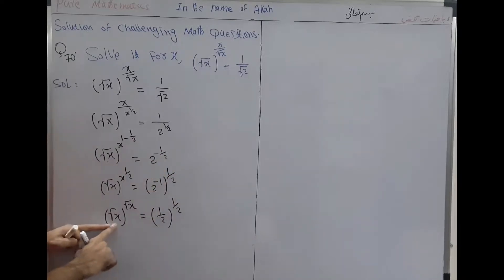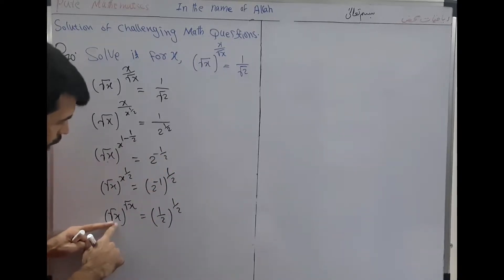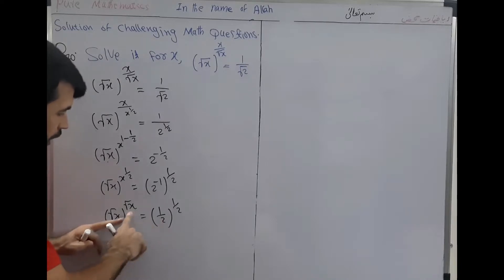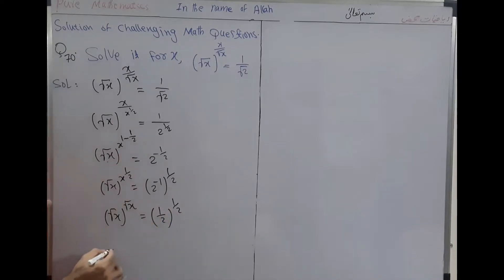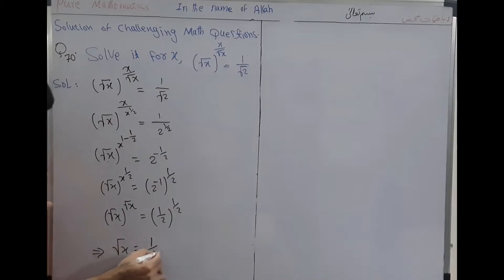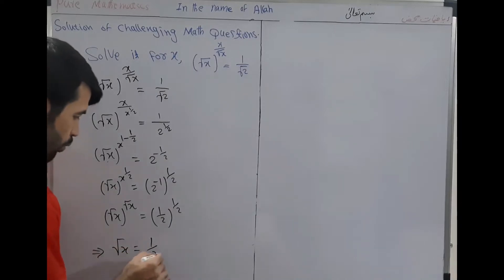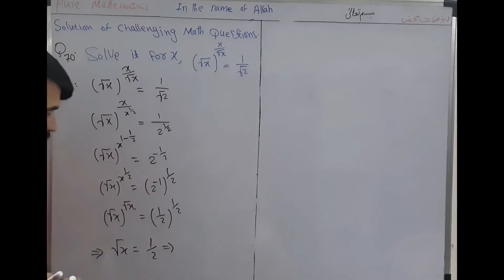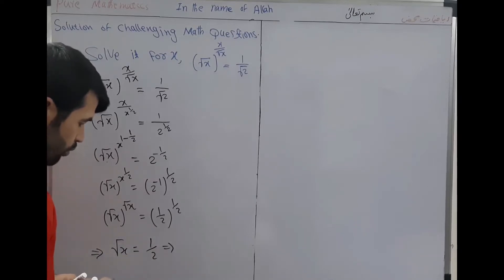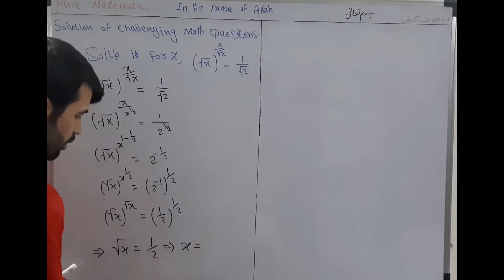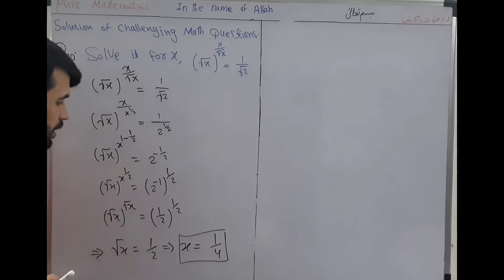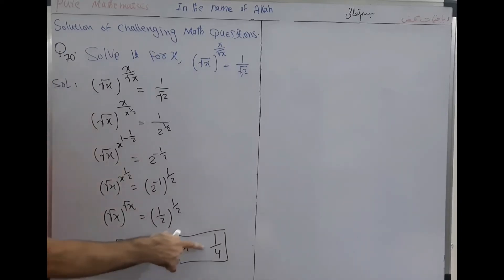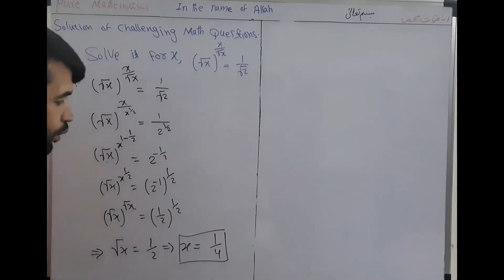Now, if we consider base equal to base and exponent equal to exponent, we can write that square root of x equals 1/2. Squaring both sides, we get x is equal to 1/4. The value of x is 1/4. Thank you.